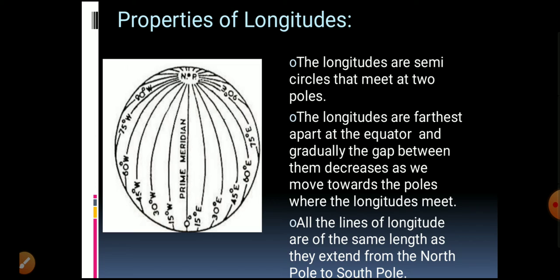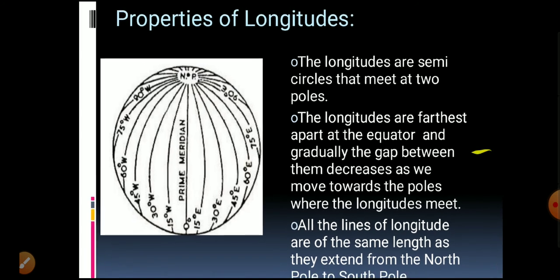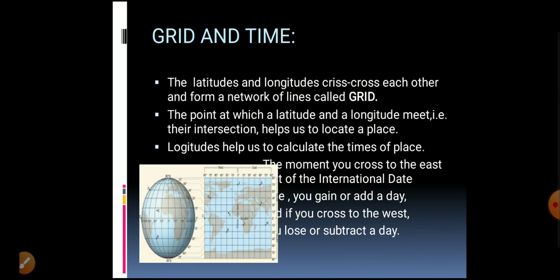Longitudes are farthest apart at the equator, and the gap between them gradually decreases as we move towards the poles, where they meet. All lines of longitude are of the same length, as they extend from the North Pole to the South Pole.